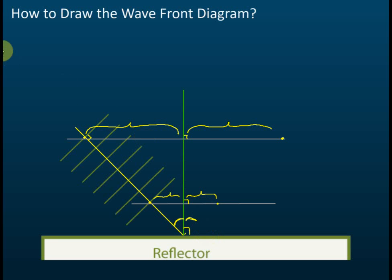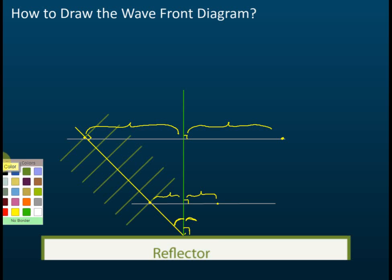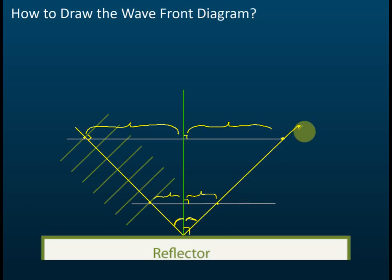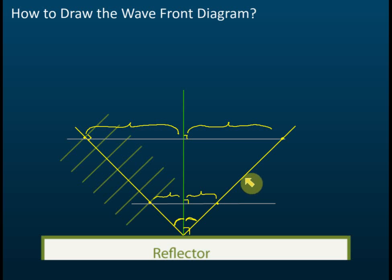After you have all these reference lines and marks, you can draw the reflected ray joining the two lines. This gives you the reflected ray, but what we actually want is the reflection of the wavefront — not just the ray.